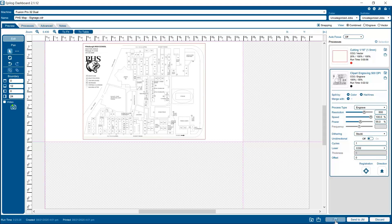Then we'll select print to send our job over to the Fusion Pro where we'll start it up and watch the machine get to work.